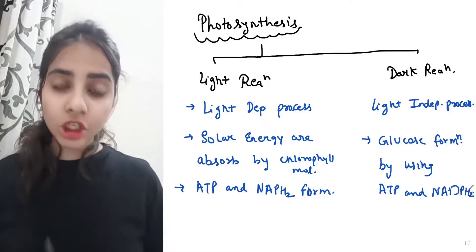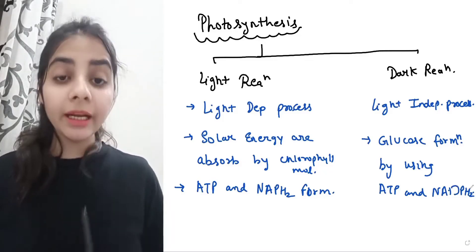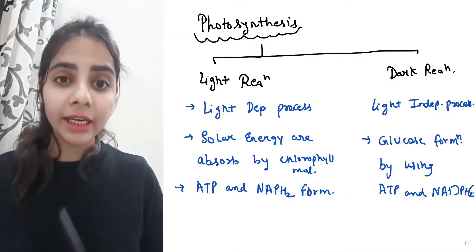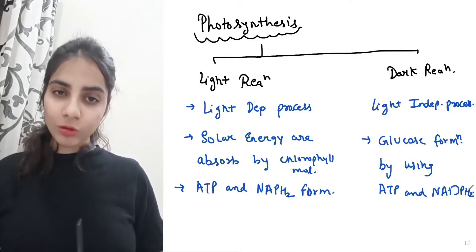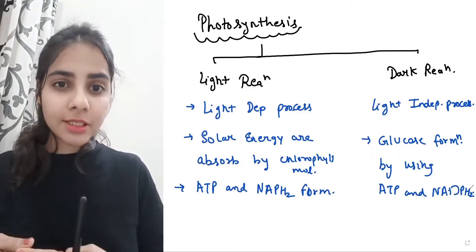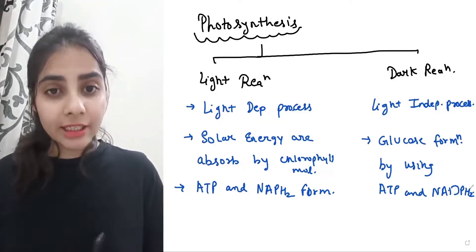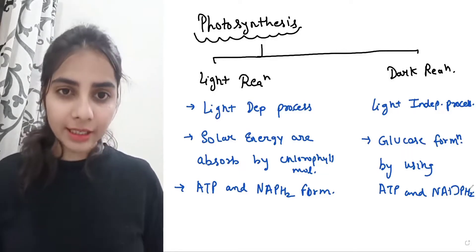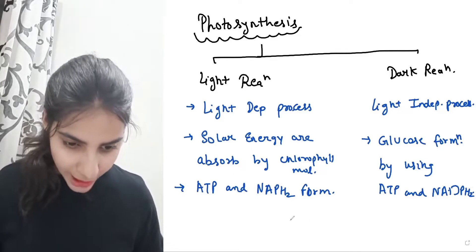So the dark reaction, even though it is independent of light — meaning it can proceed with or without light — it is still dependent on the light reaction products, i.e., ATP and NADPH2. Now, how did we come to know that photosynthesis is divided into two processes — first light dependent, then light independent? And how did we know that light reaction happens first, then dark reaction? To prove all of this, scientist Warburg performed the intermittent experiment.